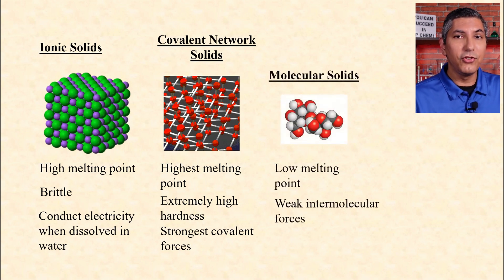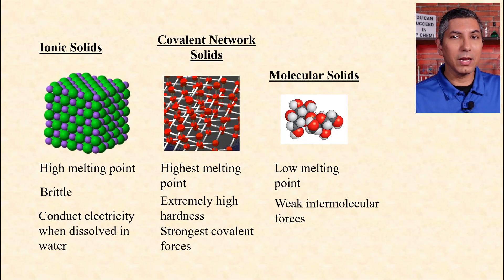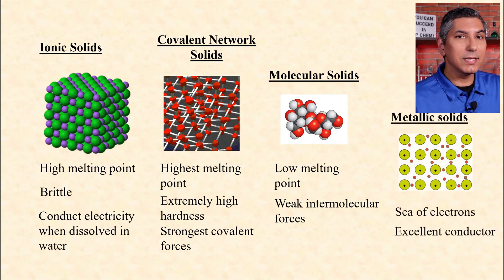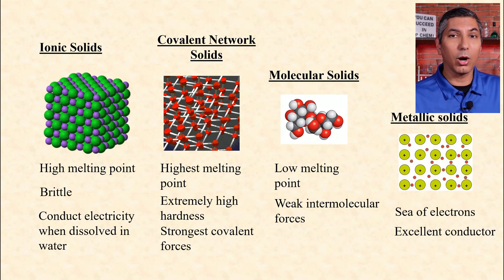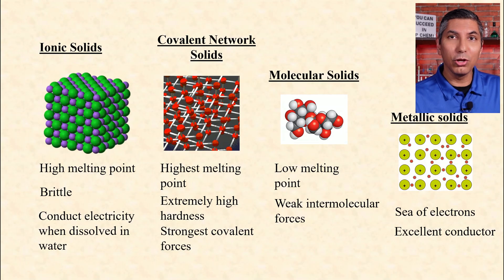Molecular solids generally have the lowest melting point — think of something like ice. These are covalently bonded molecules cold enough to be in solid form, and they have the weakest intermolecular forces of the four types. Metallic solids contain positively charged ions surrounded by a sea of electrons. They are excellent conductors of electricity in the solid state. If you hit a metallic solid with a hammer, it might create a dent because metals tend to be malleable — they can be hammered into a sheet, like aluminum foil. Remember these four types of solids.